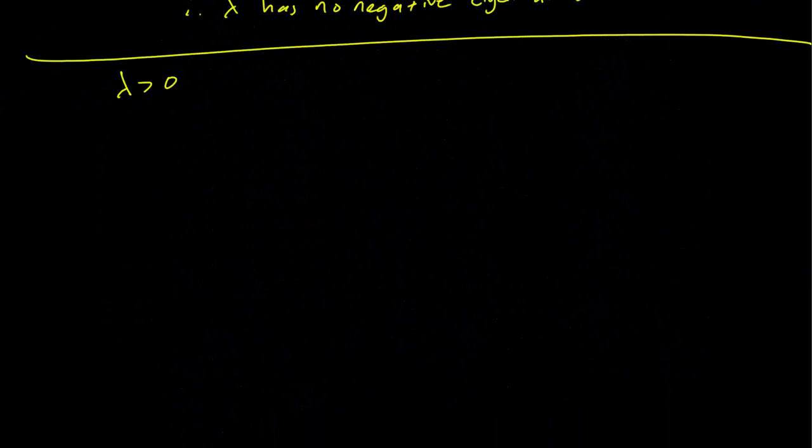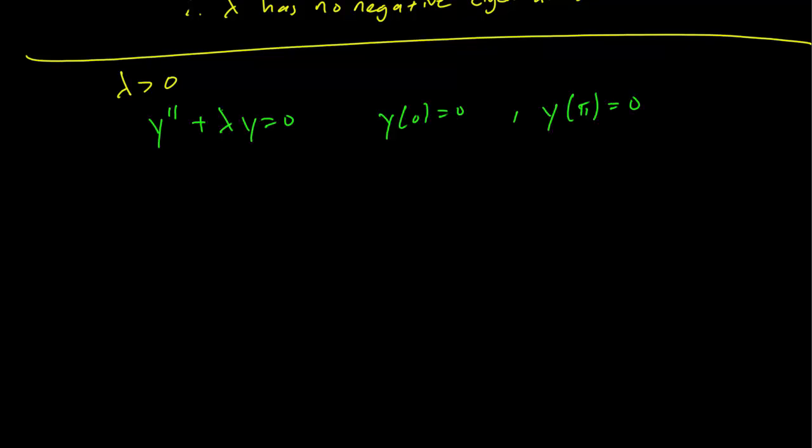And in this case we have our equation. Again, we can make our substitution with r equals root of lambda times i. And this implies that y is going to have a general solution c₁ cos(√λ x) plus c₂ sin(√λ x).